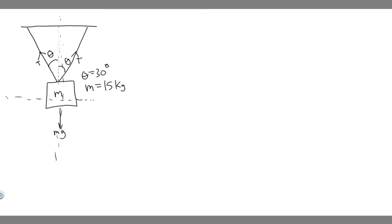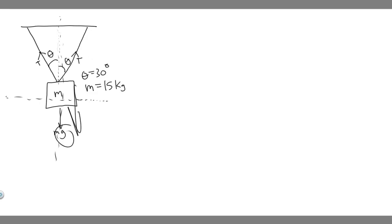So how do we solve this problem? The first thing you always want to do is draw a free body diagram of what's going on. So this is our mass, and it's going to have the force of gravity, mg, pulling it down. Then we have a tension force in each of the strings holding it up. We know these tension forces are going to be equal to each other intuitively because the object is not moving. If one tension were less than the other, it would fall. The angle is 30 degrees and the mass is 15 kilograms.